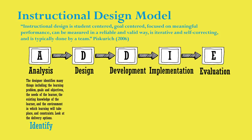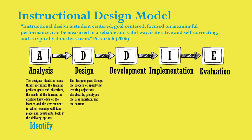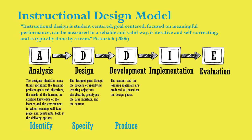During the design phase, the designer goes through the process of specifying learning objectives, storyboards, prototypes, the user interface, and the content. The key word in this phase of the process is specify. During the development phase, the content and the learning materials are produced, all based on the design phase. The key word for this phase is produce.